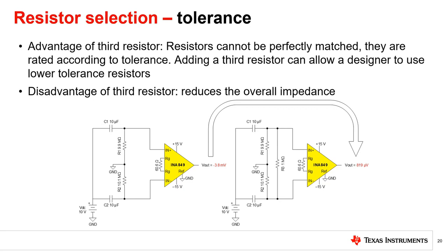Resistors cannot be perfectly matched in production; instead, they are labeled according to their tolerance. A 1% 1 megaohm resistor can be up to 1% off and still be within tolerance. With R1 and R2 varied 1% in opposite directions — the worst possible scenario — adding the third resistor significantly reduces the output error. Depending on system requirements, this third resistor can allow a designer to use lower tolerance resistors and still achieve a high precision output. Be aware, however, that the third resistor reduces overall input impedance, which may affect the sensor circuit driving the IA. The designer must ensure the impedance formed by R1 through R3 is still large compared to the source output impedance.